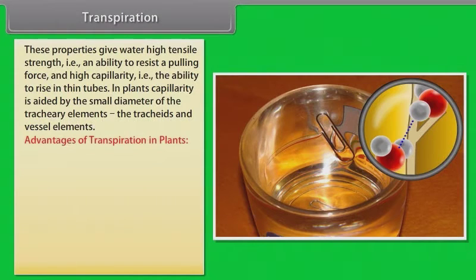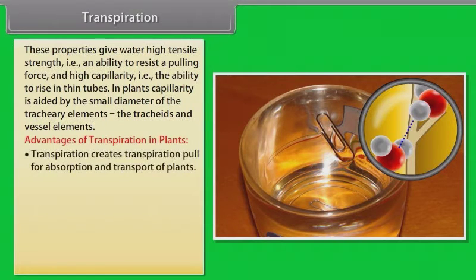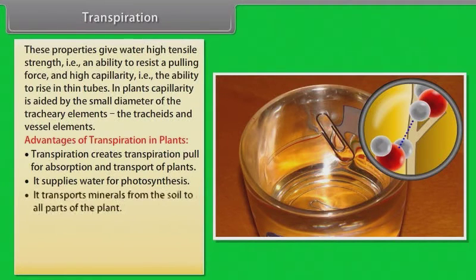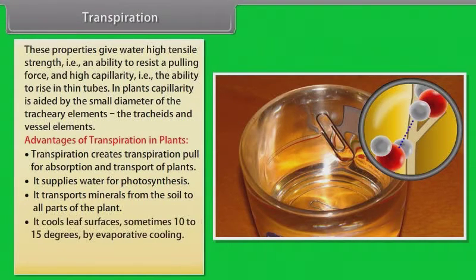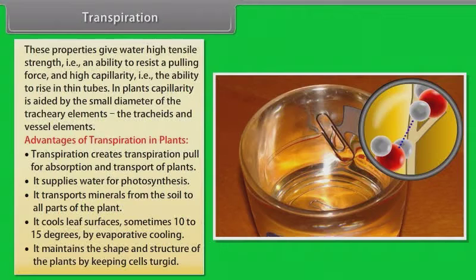Let us take a look at the advantages of transpiration in plants. It creates transpiration pull for absorption and transport in plants. It supplies water for photosynthesis. It transports minerals from the soil to all parts of the plant. It cools leaf surface sometimes 10 to 15 degrees by evaporating cooling. It maintains the shape and structure of the plants by keeping cells turgid.